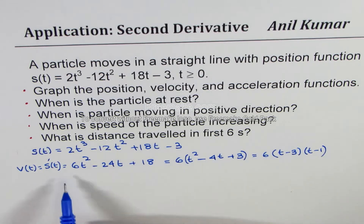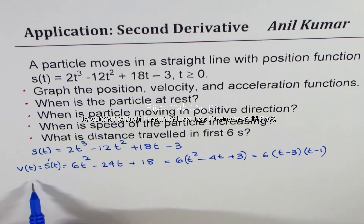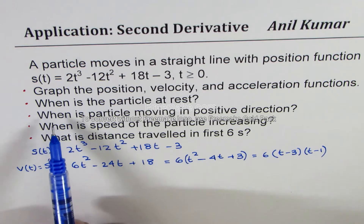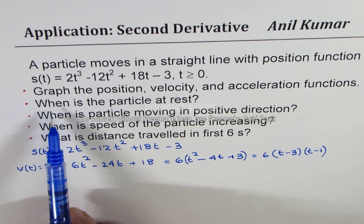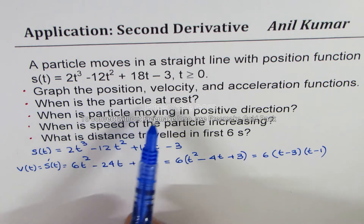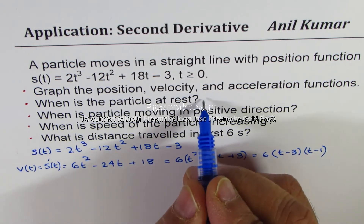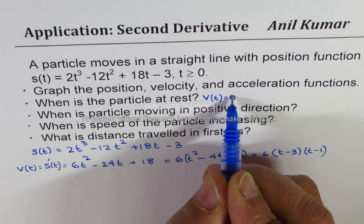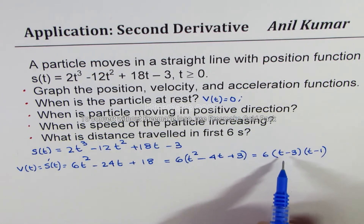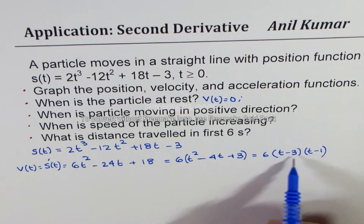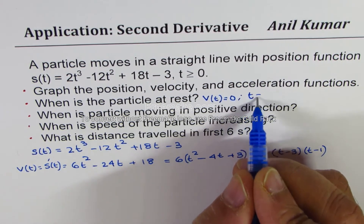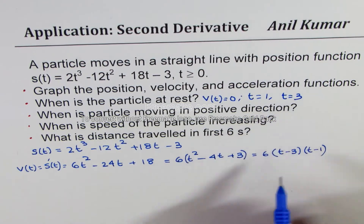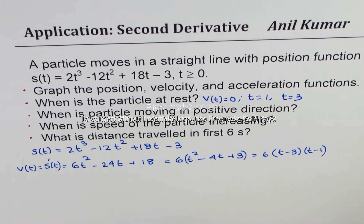With the velocity function v(t) = 6(t − 1)(t − 3), we can answer the question: when is the particle at rest? The particle is at rest when velocity equals zero. Setting v(t) = 0 gives t = 1 and t = 3, so the particle is at rest at t = 1 second and t = 3 seconds.